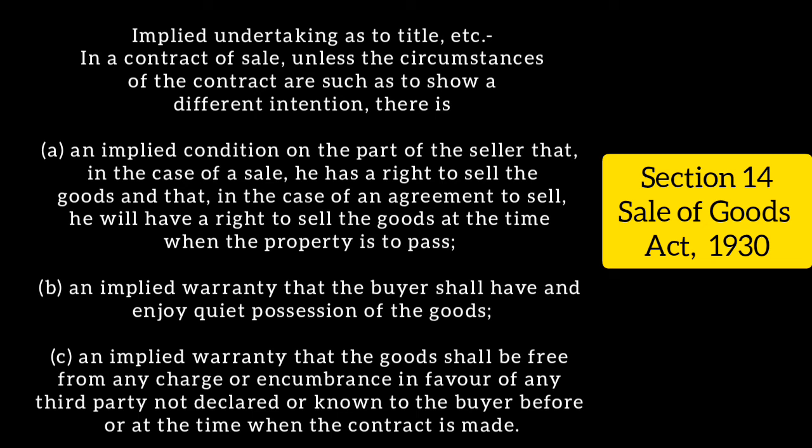To summarize — implied conditions: what happens in an agreement to sell, what happens in a contract of sale, and what happens regarding implied warranty against incumbrances — all of this you should know. Do also read the books for more details. Thank you so much for watching this video. Do like and subscribe to my YouTube channel for more videos.